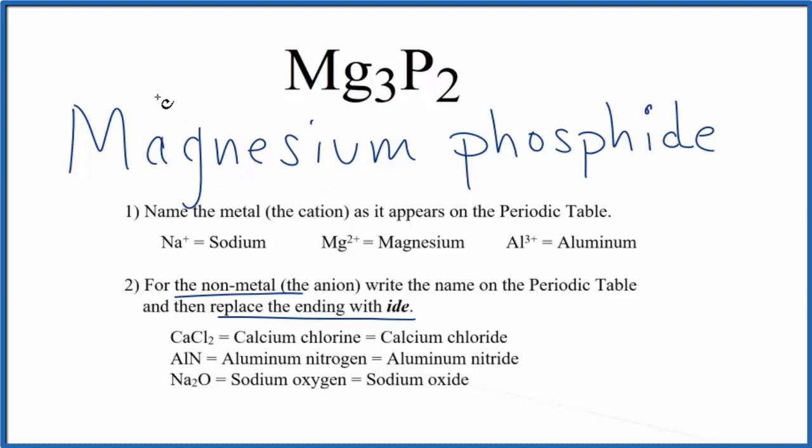group 2 on the periodic table, when it bonds, it forms 2 plus ions. Each of these magnesiums here has an ionic charge of 2 plus. Phosphorus, that is 3 minus.